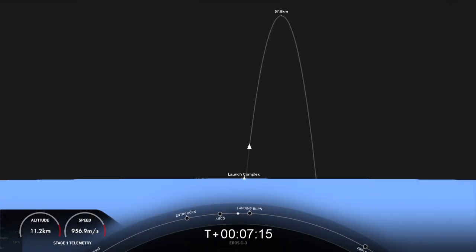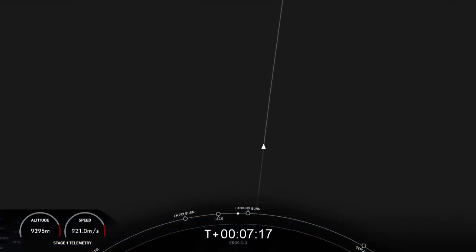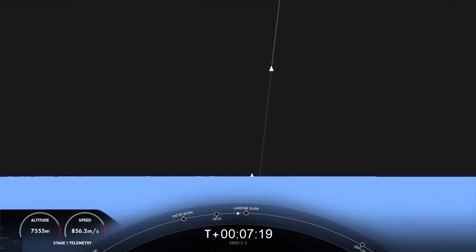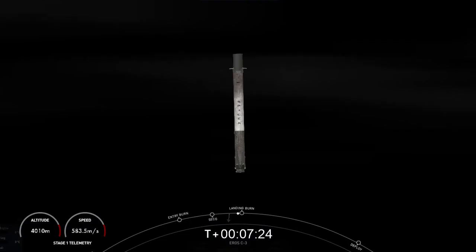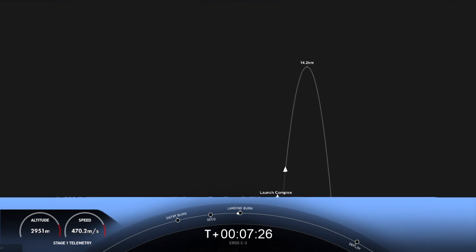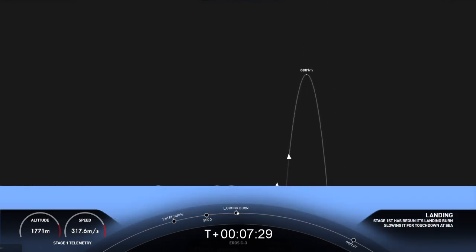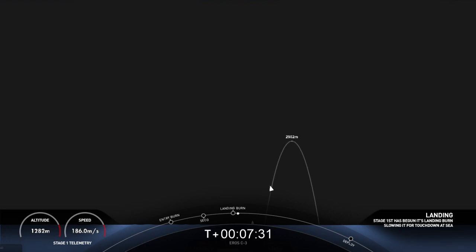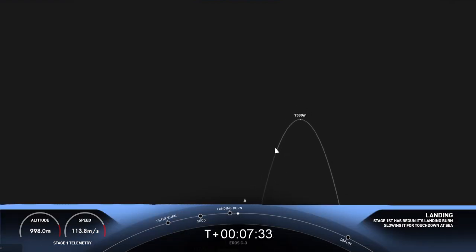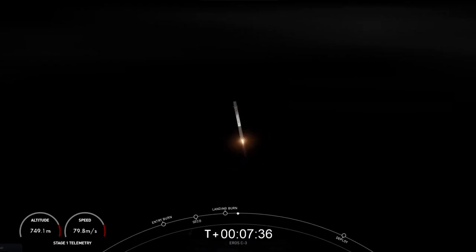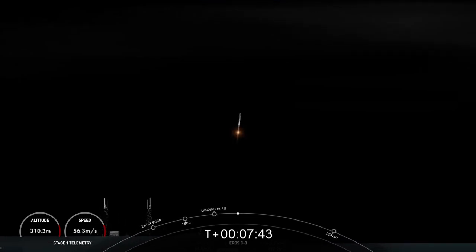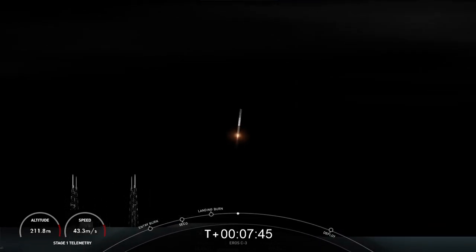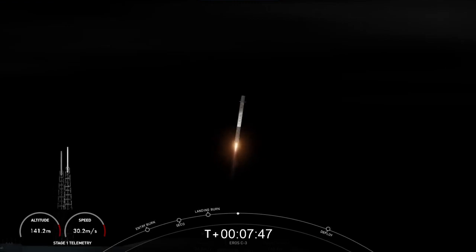That one single engine has enough thrust to slow the vehicle down to touchdown for landing. Stage 1 transonic. Stage 1 landing burn. And there we've had the first stage. Stage 2 FTS is saved. First stage landing burn has begun. Let's watch as Falcon 9 touches down for landing. Lightning leg deployed.